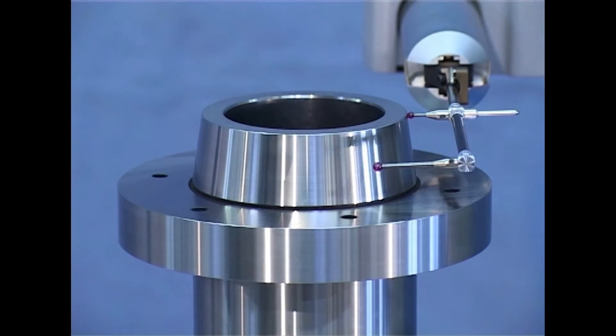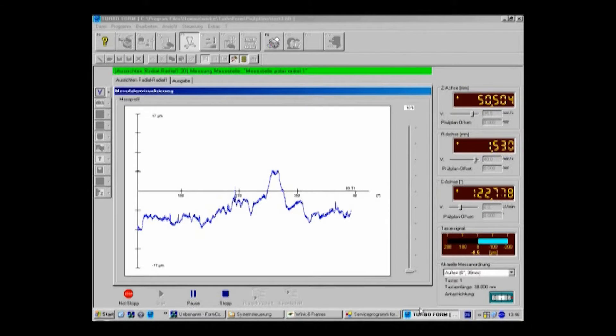Therefore, the alignment time on the workpiece sample could be reduced by 60%. The workpiece is aligned and the roundness and conicity characteristics are determined in less than one minute.